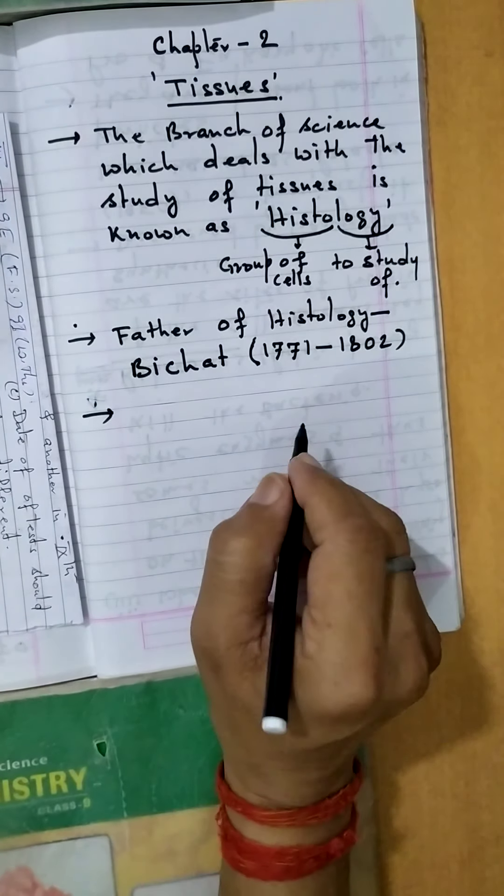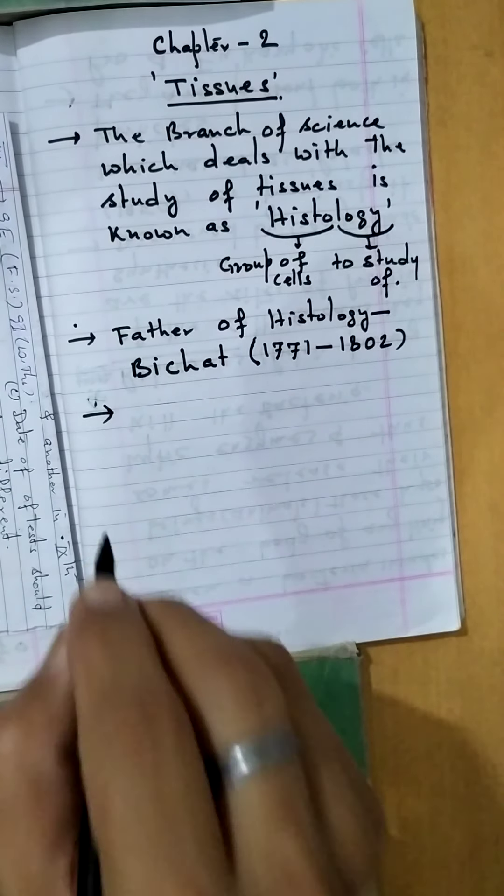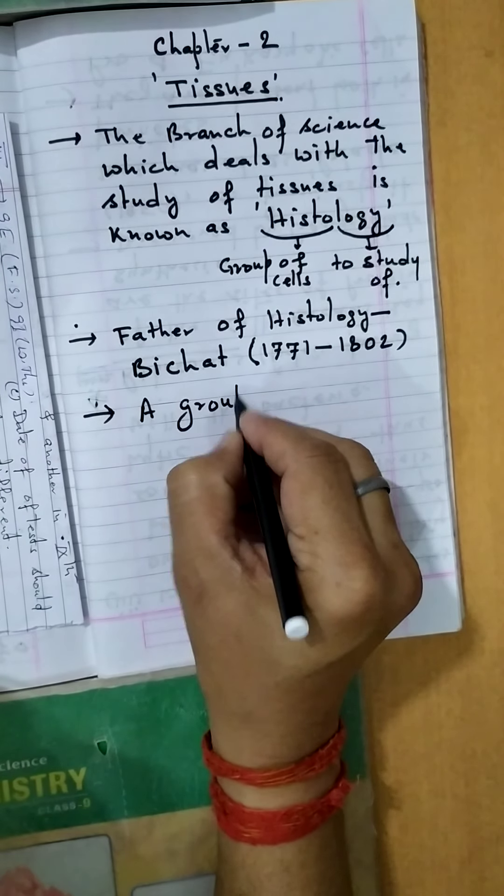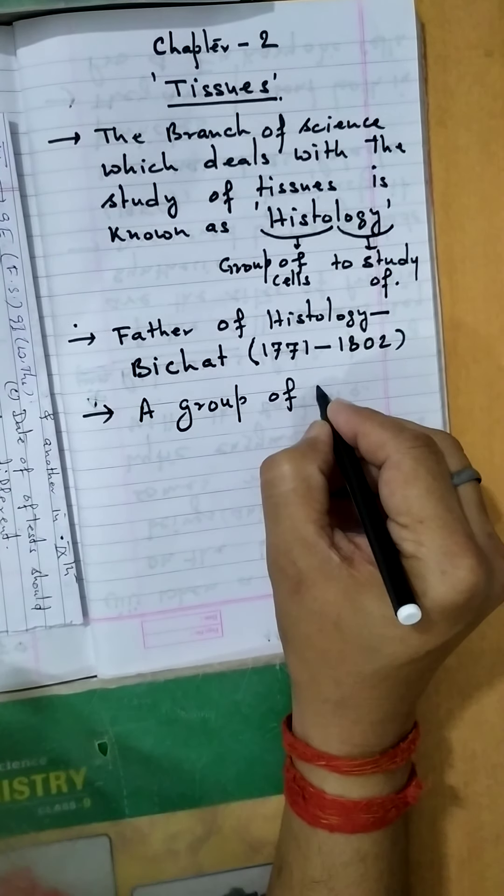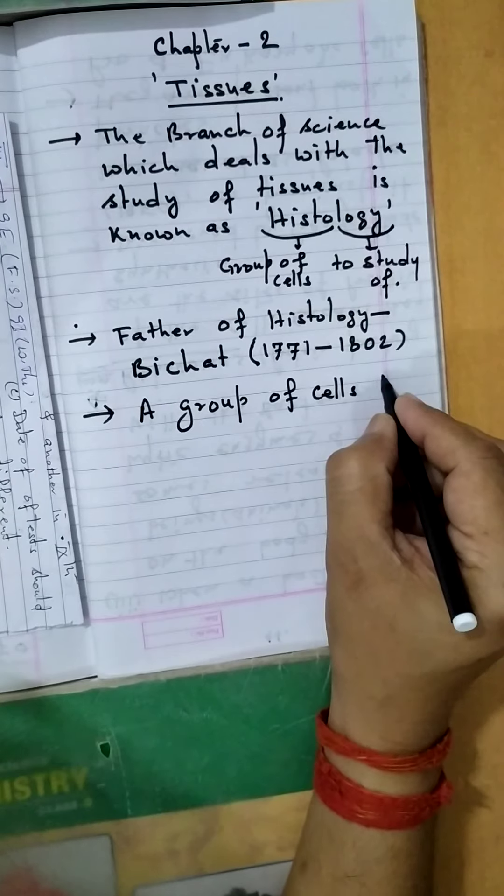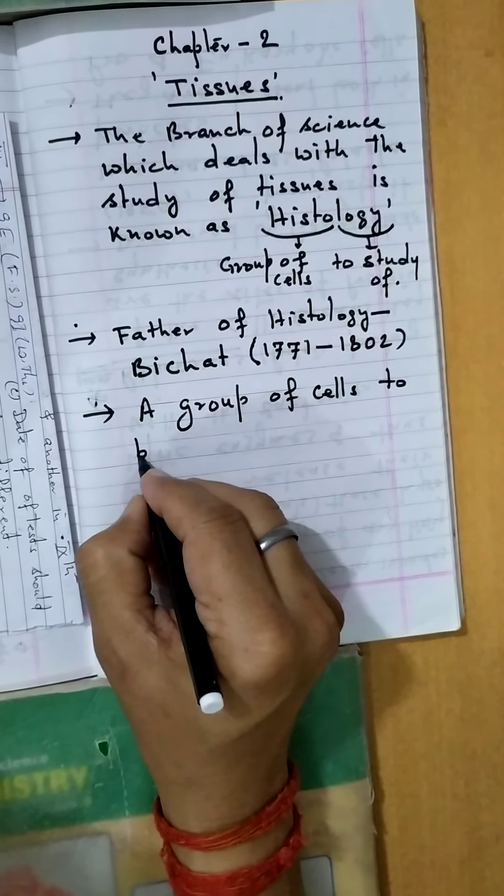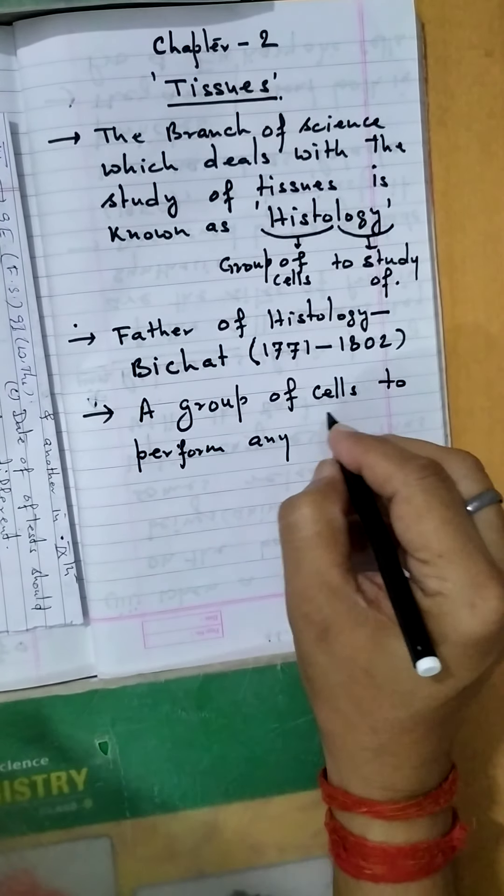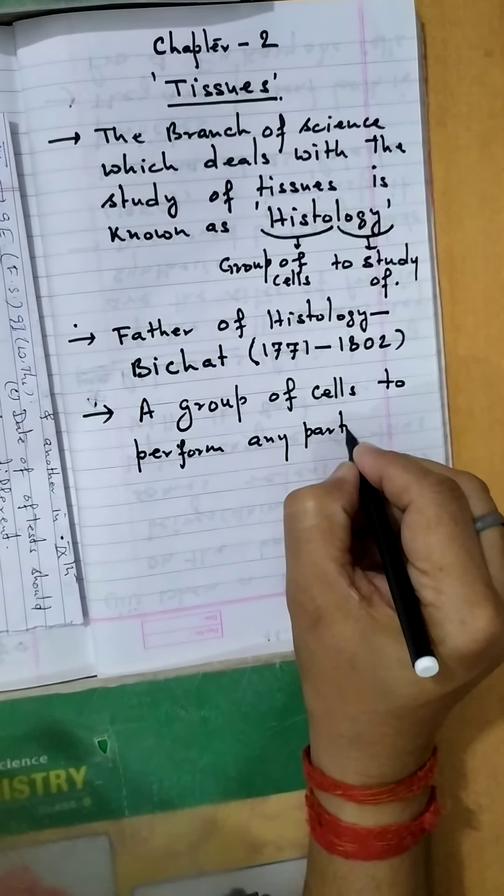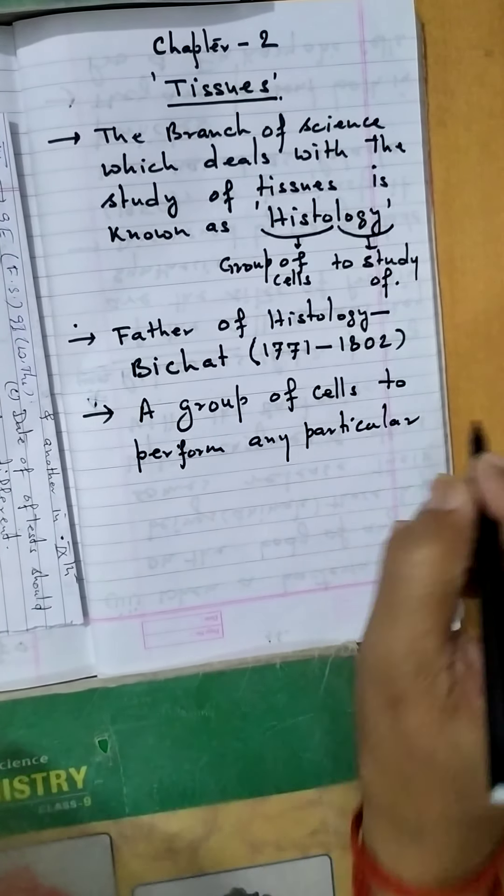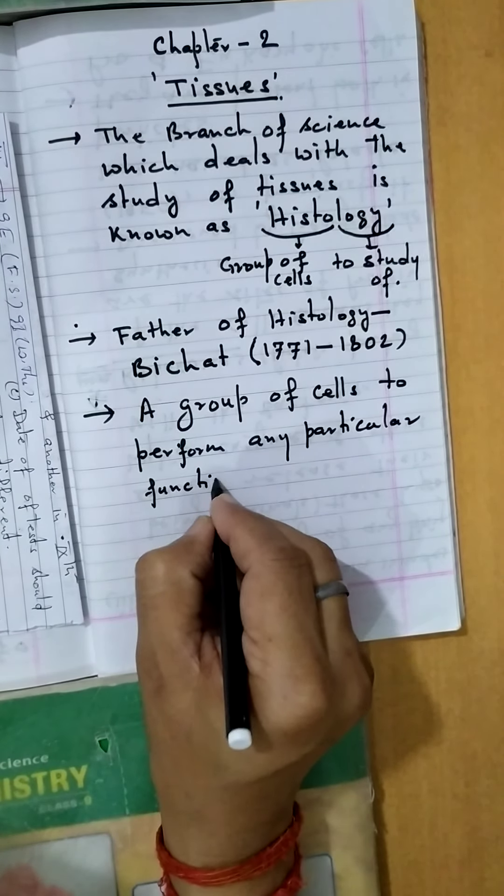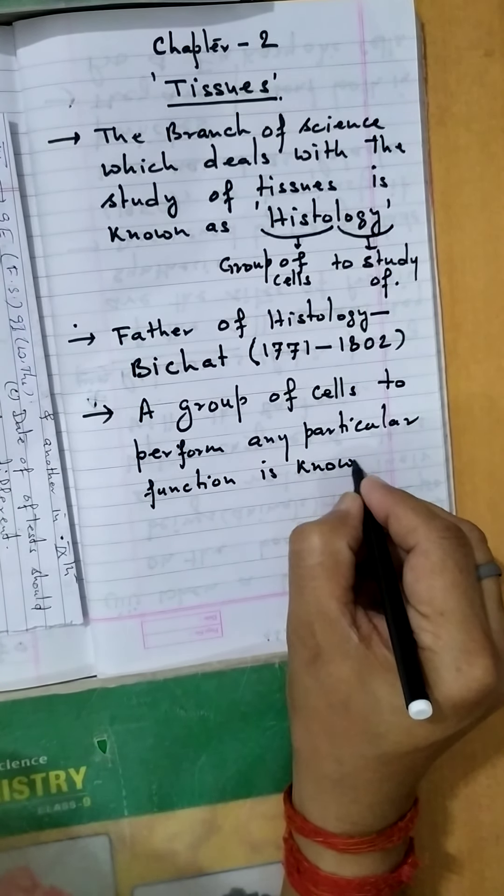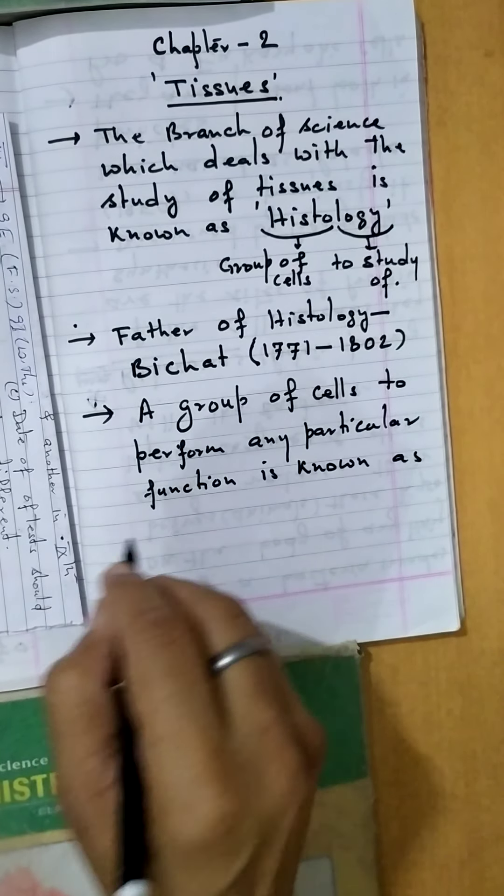Now what is tissue? A group of cells to perform any particular function is known as a tissue.